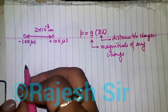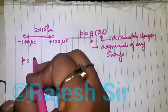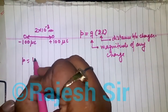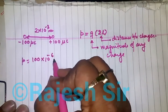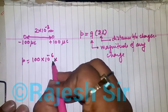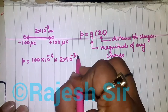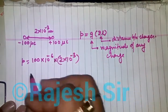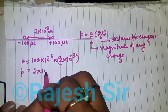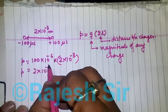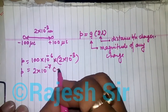Here, p equals the magnitude of the charge, which is 100 microcoulombs (10⁻⁶), multiplied by the distance between the two charges, 2×10⁻³. On solving, we get p = 2×10⁻⁷ coulomb meter.